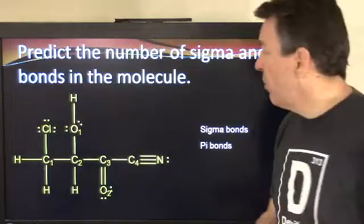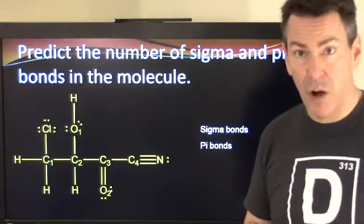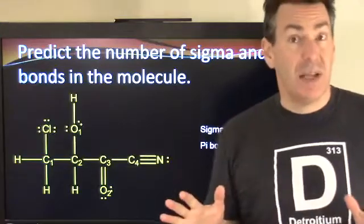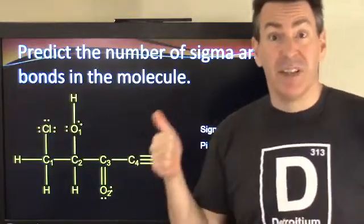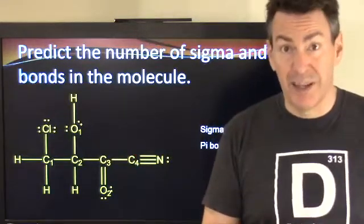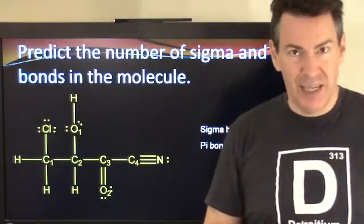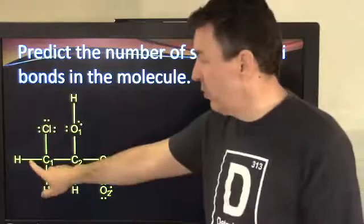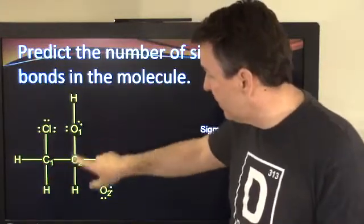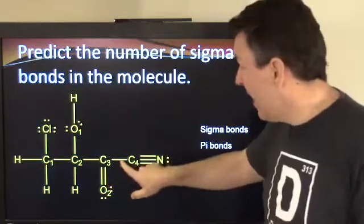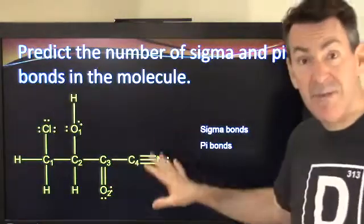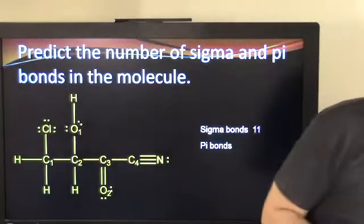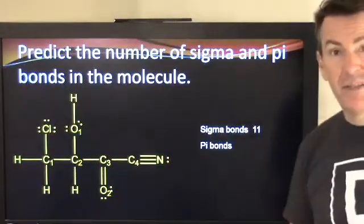Now let's figure out how many sigma and pi bonds are in this structure. Every bond — whether single, double, or triple — contains one sigma bond. So if we just count up all the bonds here, that gives us our sigma bonding total. Counting each bond: one, two, three, four, five, six, seven, eight, nine, ten, eleven. There are 11 sigma bonds in this structure. Sigma bonding is that direct overlap of orbitals.